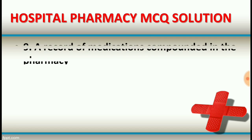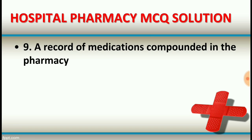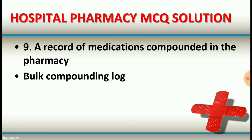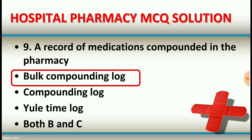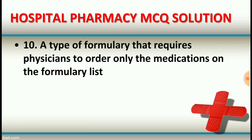Question number nine: A record of medications compounded in the pharmacy is — option A: bulk compounding log. Option B: compounding log. Option C: yield time log. Option D: both B and C. The right answer is option A, bulk compounding log — a record of medications compounded in the pharmacy.